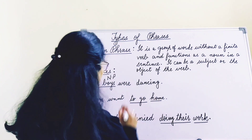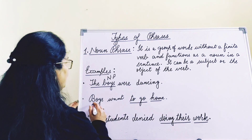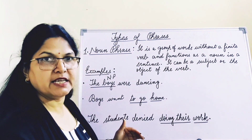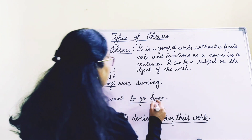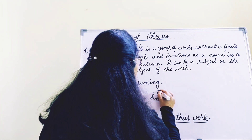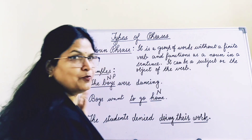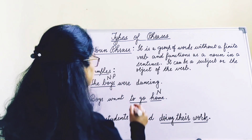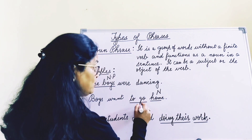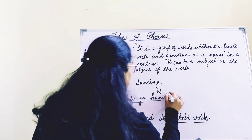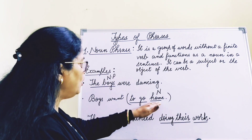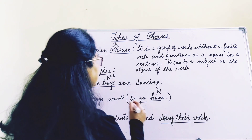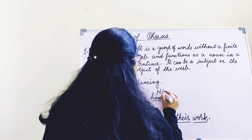Second example: 'Boys want to go home.' Here, boys is the subject and want is the finite verb. Home is a noun, and 'to go' is an infinitive — it is not a verb, keep that in mind. So 'to go home' — 'to go' is adding extra meaning to home. So 'to go home' is a noun phrase.